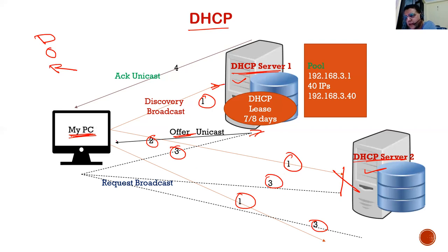Because the request is a broadcast, Server 2 will understand that the client is already being served by Server 1 and will stand down. Without this, there could be duplicate addresses assigned. After this, the last message is a kind of acknowledgement coming from Server 1 — this is the fourth message.